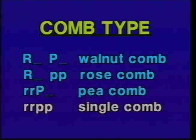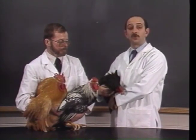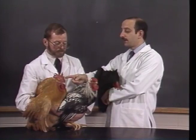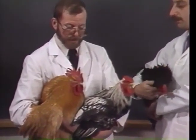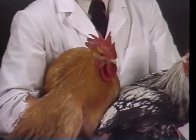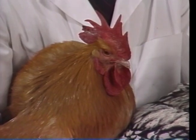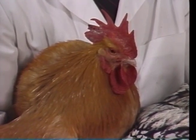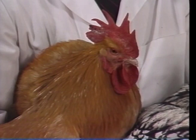The single comb is an animal homozygous recessive at both loci — little r little r and little p little p. We have three birds representing three of the four comb types. The first bird Dr. Brandt holds is an Orpington with a single comb — the most common comb type. It's a narrow blade of tissue with points along the top and a longer blade at the back of the bird's head.